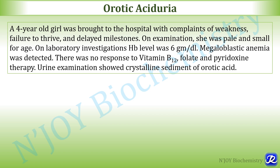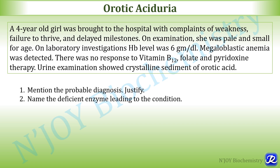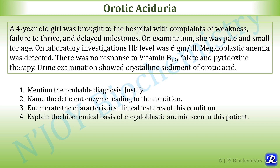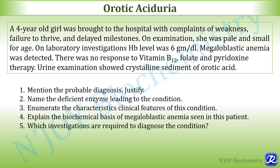Now, what are the various questions that can be asked on this topic? The first is: mention the probable diagnosis and justify it. Name the deficient enzyme leading to the condition. Enumerate the characteristic clinical features. Explain the biochemical basis of megaloblastic anemia seen in this patient. Which investigations are required to diagnose the condition, and how can this patient be managed? So let's find out the answers to all these questions.